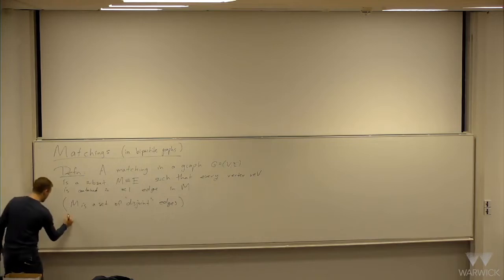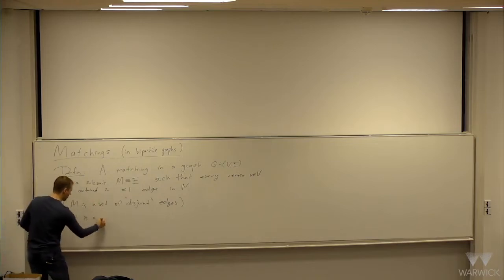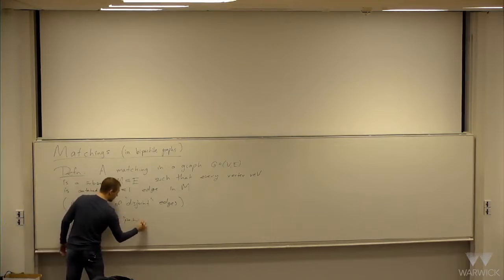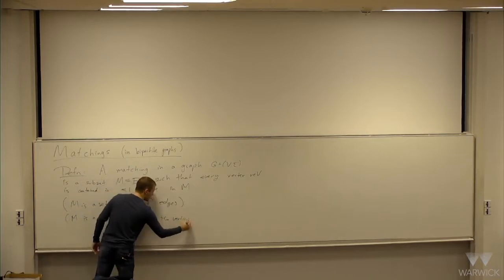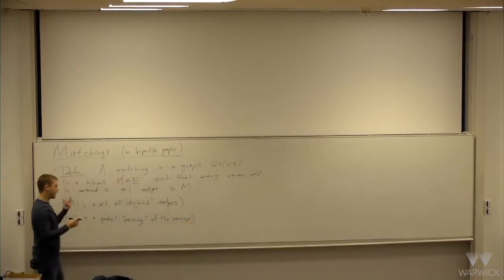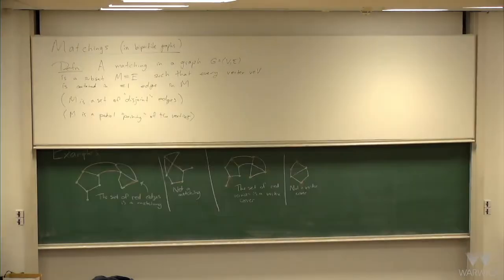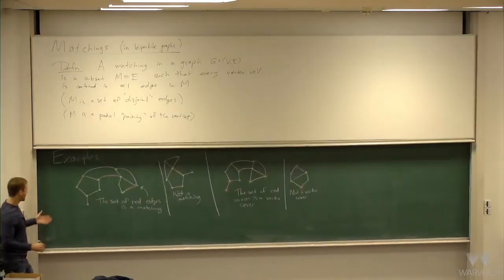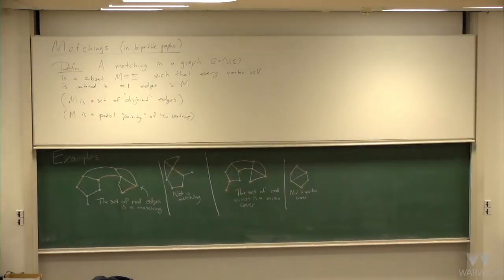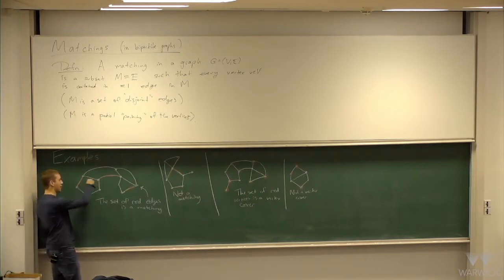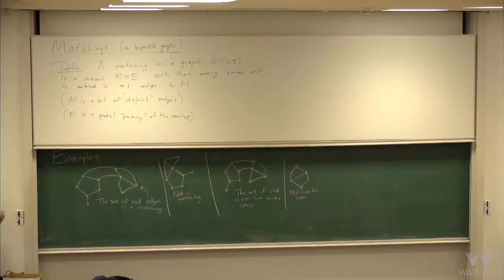Another way to think of this: M is a set of disjoint edges — they don't have any shared endpoints. M is a kind of partial pairing of the vertices using edges. For example, here we have a graph, and the set of red edges here is a matching, because each vertex is in at most one red edge.